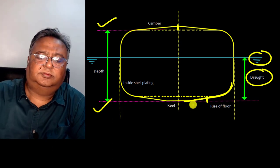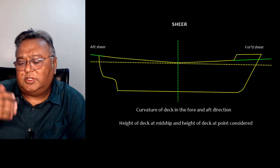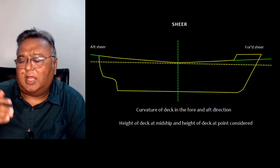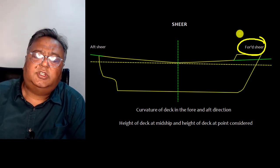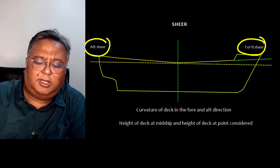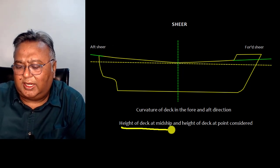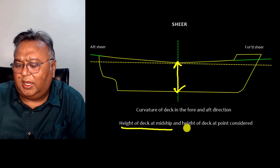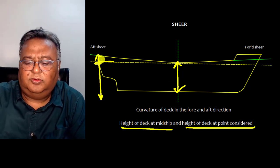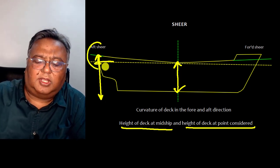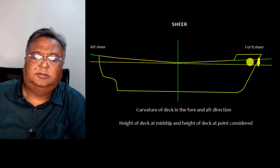Now let's talk about shear. Shear is the curvature of the deck in the forward and aft direction. In the forward direction it is called forward shear, and in the aft direction it is called aft shear. It is measured as the difference between the height of the deck at midship and the height of the deck at the point being considered. This is the aft shear and this is the forward shear.